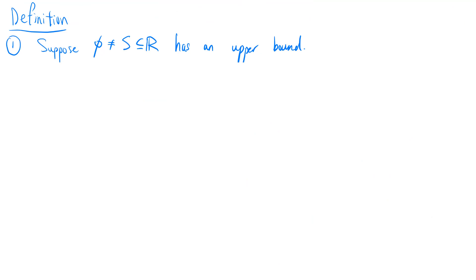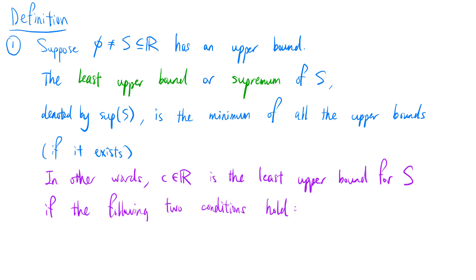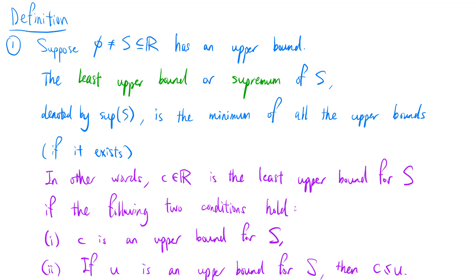Let's give another definition. Suppose s is a non-empty subset of the real numbers and it has an upper bound. The least upper bound, or supremum of s, denoted by sup(s), is the minimum of all the upper bounds if it exists. In other words, real number c is the least upper bound for s if: (1) c is an upper bound for s, and (2) if u is an upper bound for s, then c is less than or equal to u.